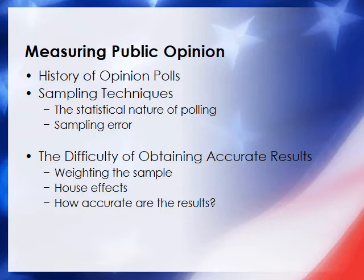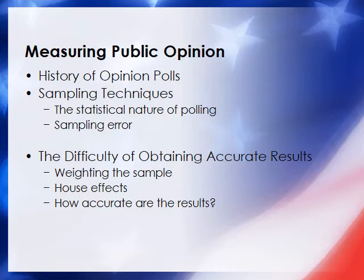The difference between your sample and the entire population is what we refer to as sampling error. Several factors make it difficult to obtain accurate results — for example, women are much more likely to pick up the phone than men, so your sample might be 70% women when the actual population isn't. You may need to weight respondents to correct for this, and the decisions made in that process are referred to as house effects, which is why two polls conducted by different universities on the same day can have different results.